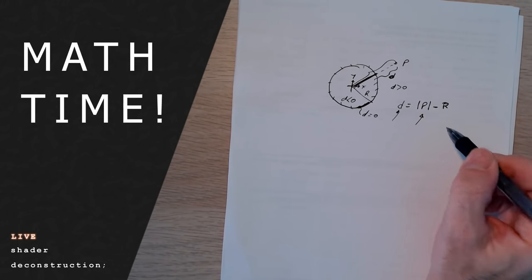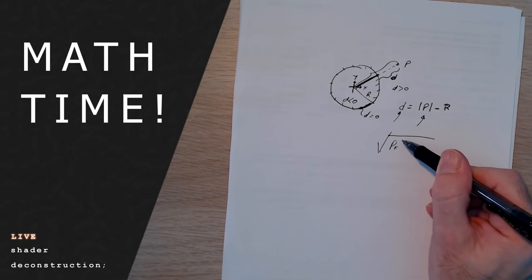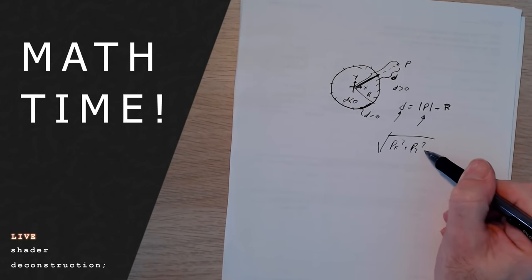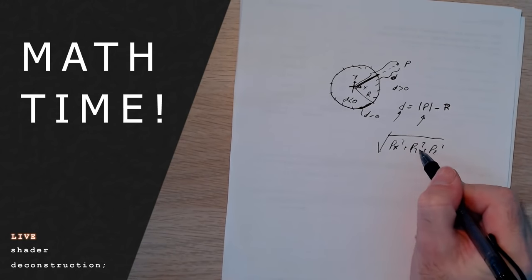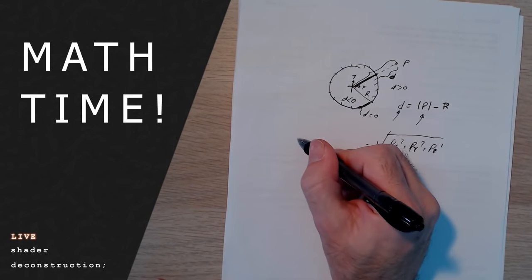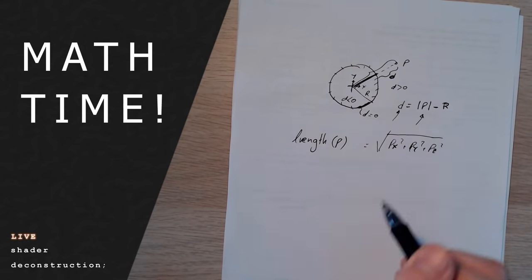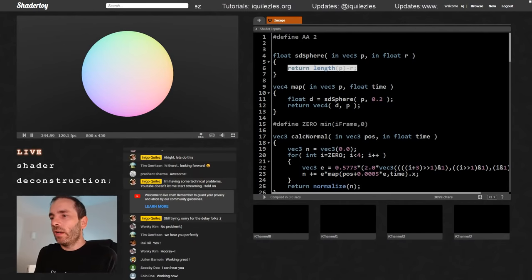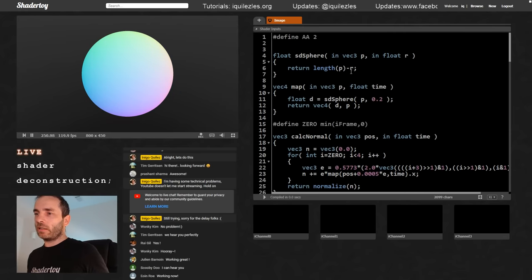The length of P is just the three components of P squared — the Pythagorean theorem, where PX, PY, PZ are the XYZ components of point P. You can encode this in GLSL just by using the length function. So in the shader, we have length(P) minus R, easy. That gives us our sphere. Now let's replace this with a box.